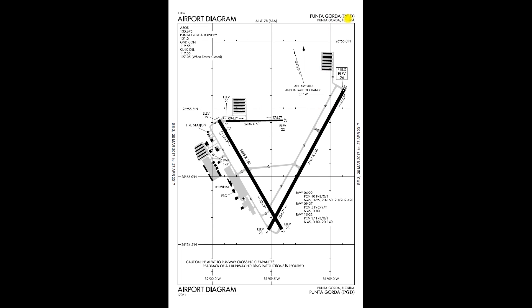So it tells you the city and the airport it's for, it tells you it's an airport diagram, and it has an ASOS frequency — they also use that as the ATIS frequency there. Punta Gorda control tower with a star means it's a part-time control tower; the rest of the time it's a CTAF frequency on 121.0. There's also ground control frequency, clearance delivery frequency, and when the tower is closed, clearance delivery relays over to Fort Myers approach.